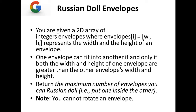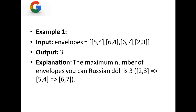We just need to put one envelope inside a bigger envelope and see how many envelopes we can nest inside each other. Note that you cannot rotate the envelope. In the first example, we have envelopes [5,4], [6,4], [6,7], and [2,3]. The maximum number of envelopes we can Russian doll is three: we take the smallest one [2,3], place it inside [5,4], and then into [6,7].